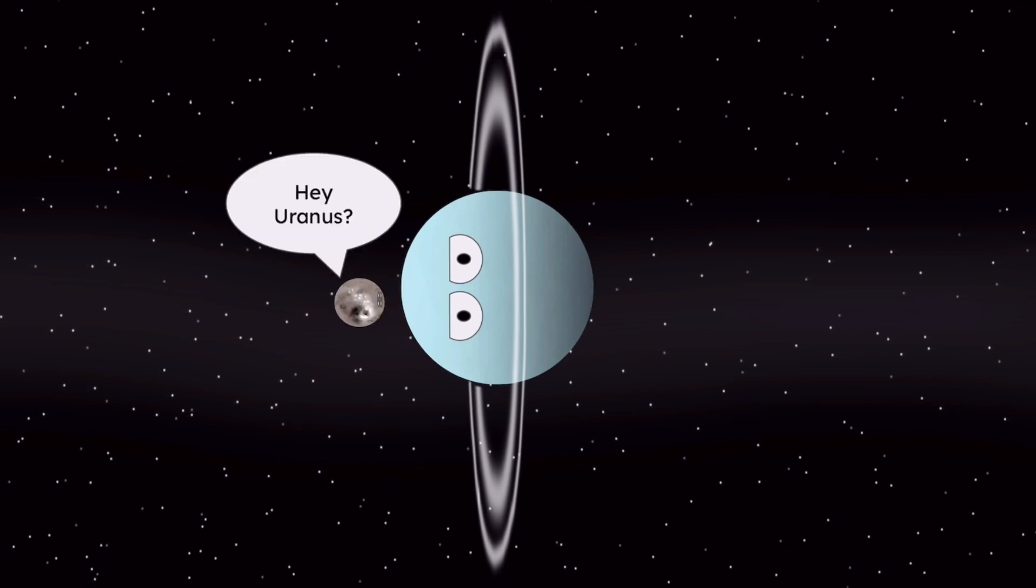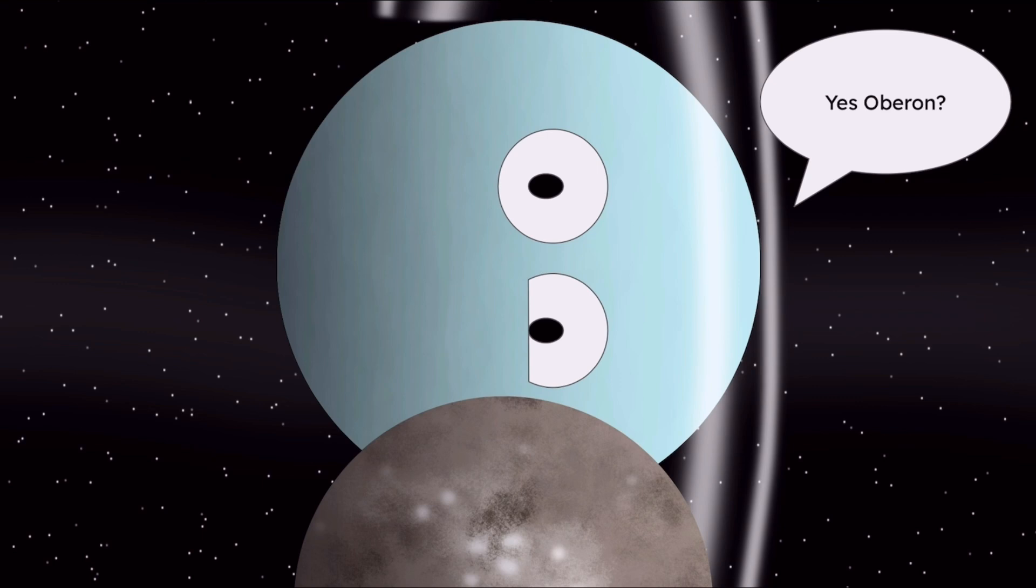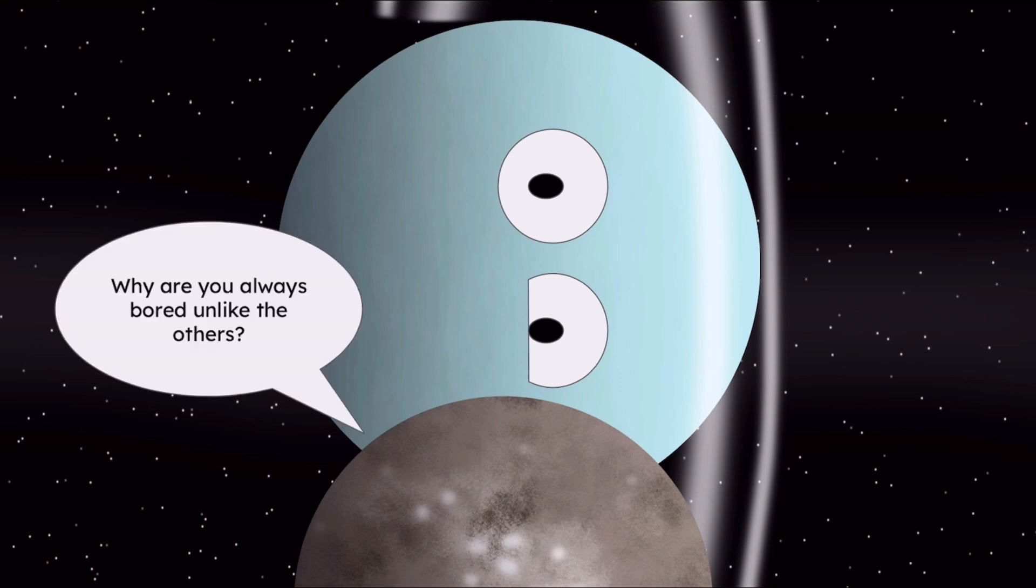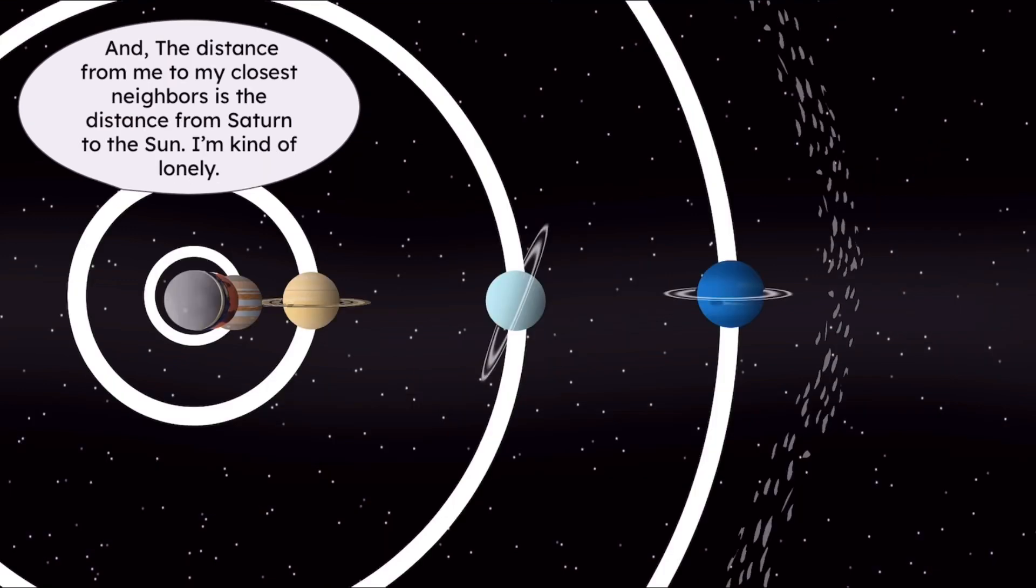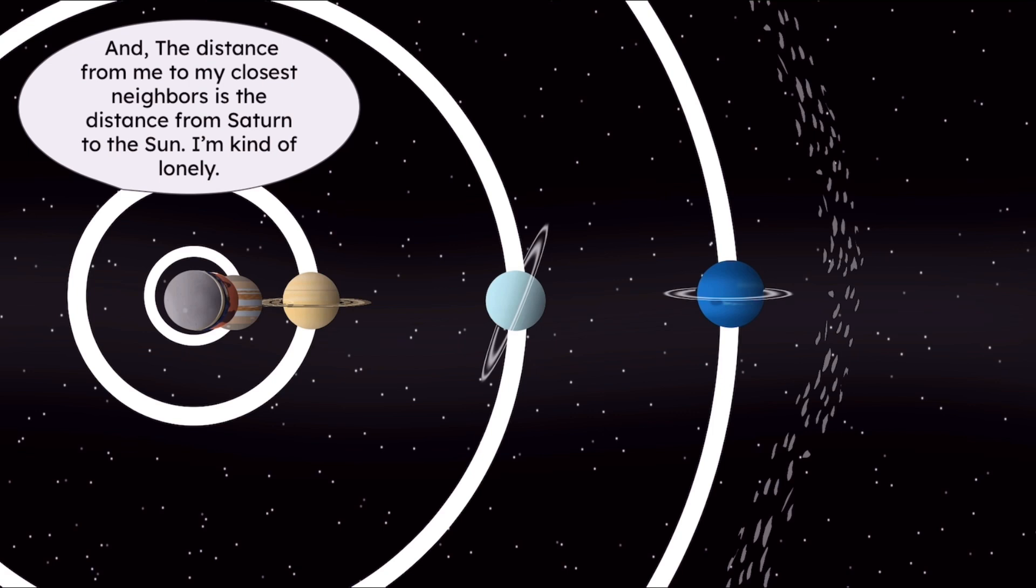Hey Uranus. Yes, Oberon, why are you always bored unlike the others? Well I wouldn't really call myself bored, just... Anyways, one reason is that I'm seeing you sideways, and the distance from me to my closest neighbors is the distance from Saturn to the Sun. I'm kind of lonely. Doesn't Neptune meet up with you a lot?